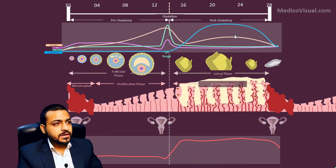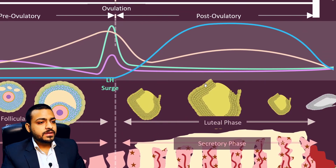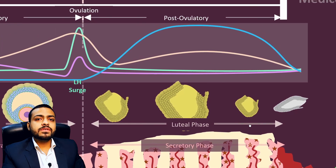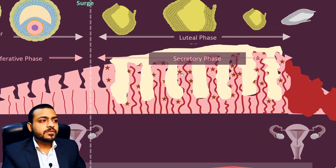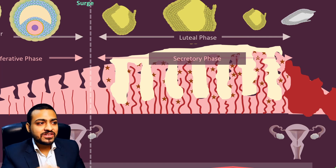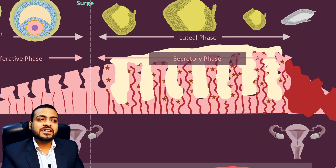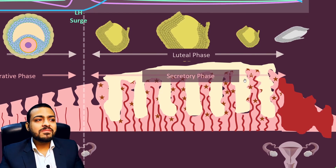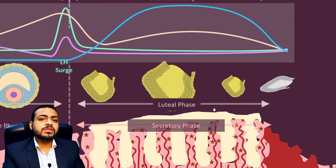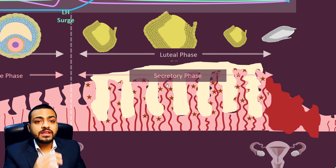Here is the review slide. As the corpus luteum forms, this post-ovulatory phase is the luteal phase of the ovarian cycle, dominated mainly by progesterone. Under the influence of progesterone, the uterus becomes well-developed to meet the nutritional needs of the baby: blood vessels become engorged and tortuous, glands become deep and specialized, cells become filled with glycogen, and glands start secreting uterine milk. Because of this secretion, this phase is called the secretory phase of the uterine cycle.